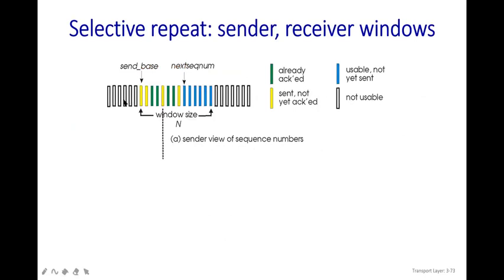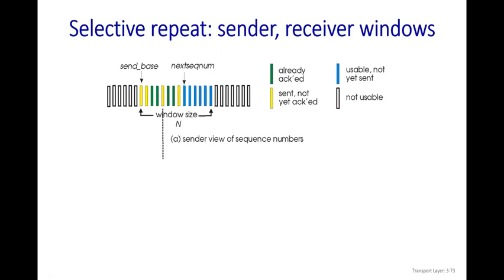Here is the sender and receiver window diagram for Selective Repeat. Gray or black-and-white packets have not been used yet. Yellow packets have been sent but not acknowledged. Green packets have been sent and successfully acknowledged. Blue packets are ready to be sent but have not been sent yet. There are no specific required color codes — in your exam you can use different hatching patterns to represent these four states.